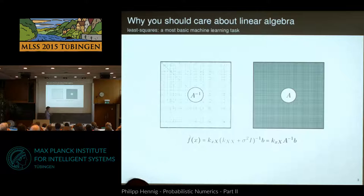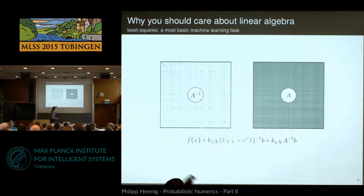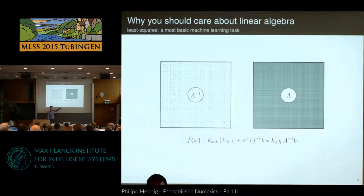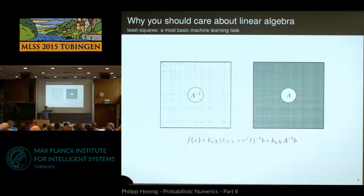As Neil Lawrence has been talking about this a lot, you now all know that to compute the posterior mean of a Gaussian process regressor or a kernel ridge regressor, you have to form this large matrix of size number-of-data-points by number-of-data-points, which is positive definite. You have to invert this matrix and multiply it with the data set B, which means you have to find exactly this vector x that solves this task. You've learned that inverting a matrix is cubically expensive — it's n cubed.